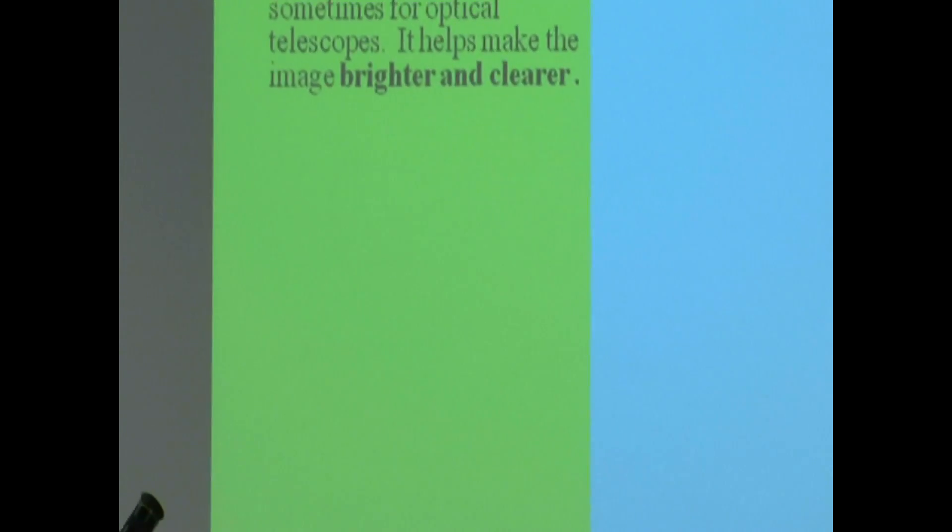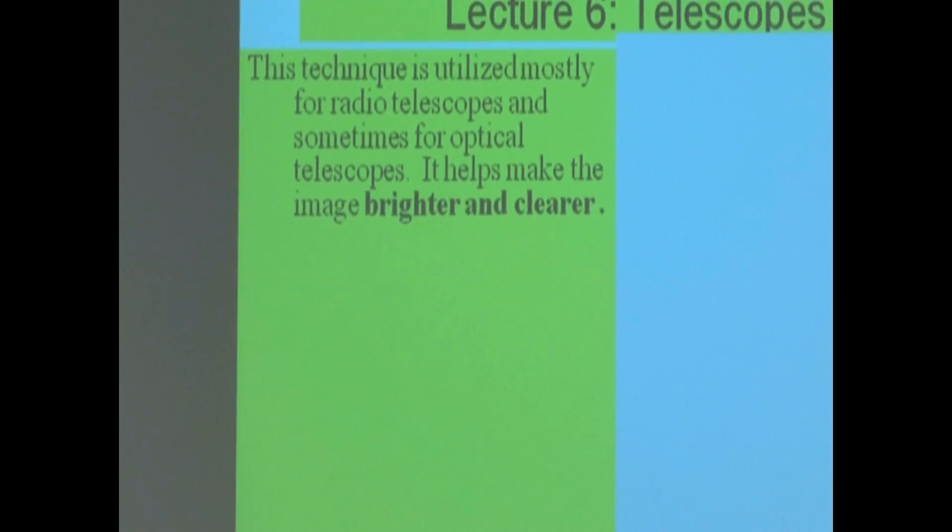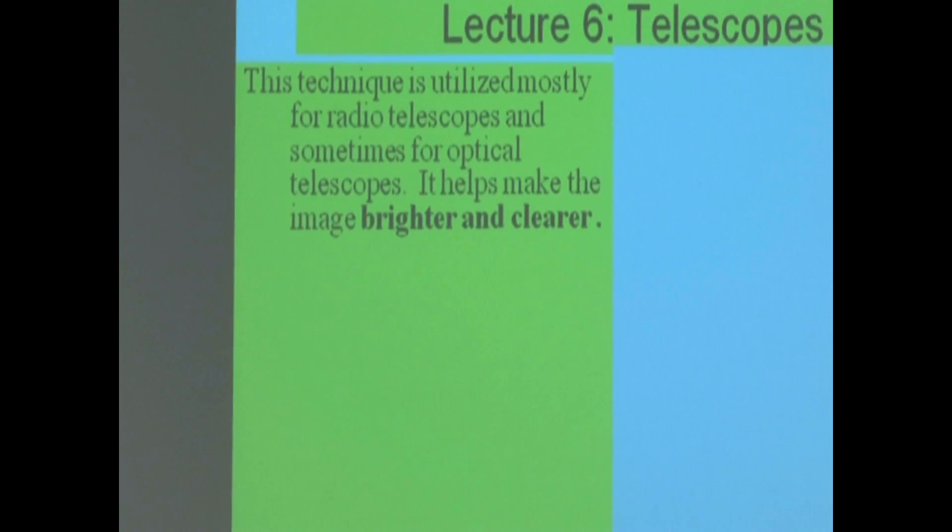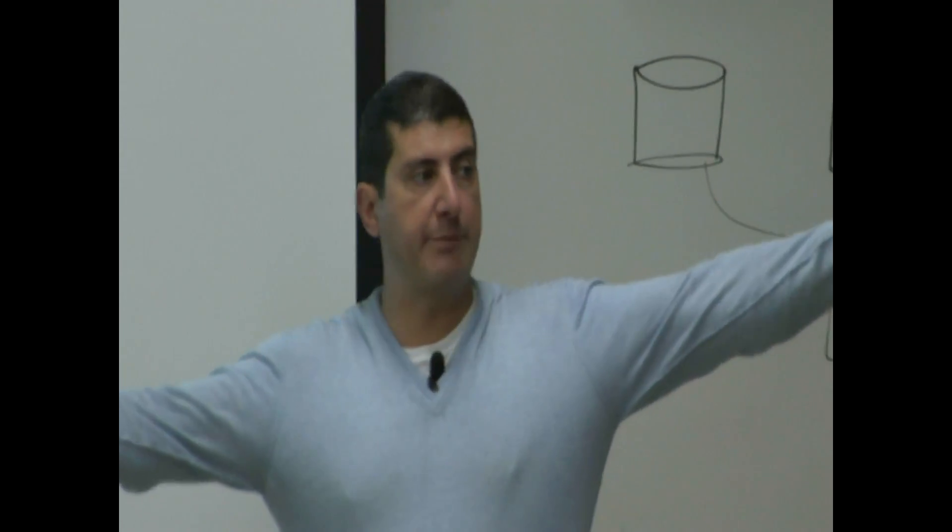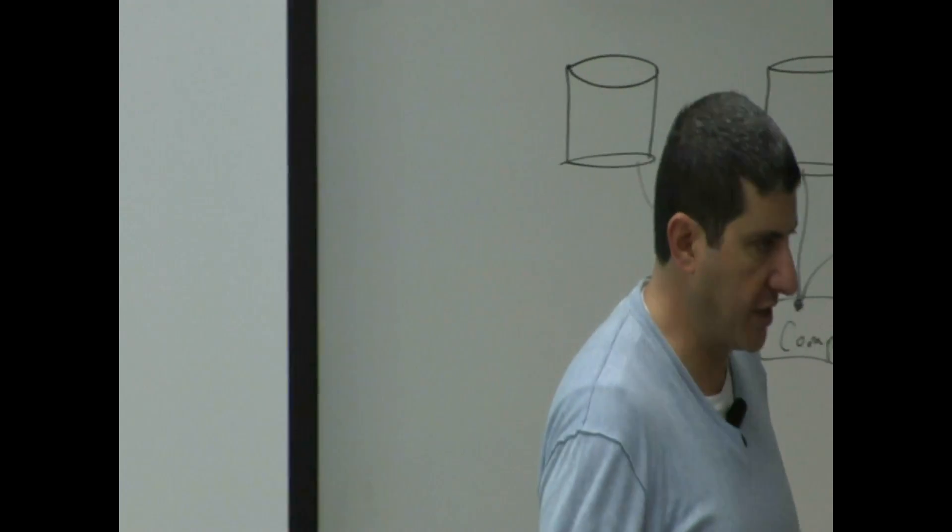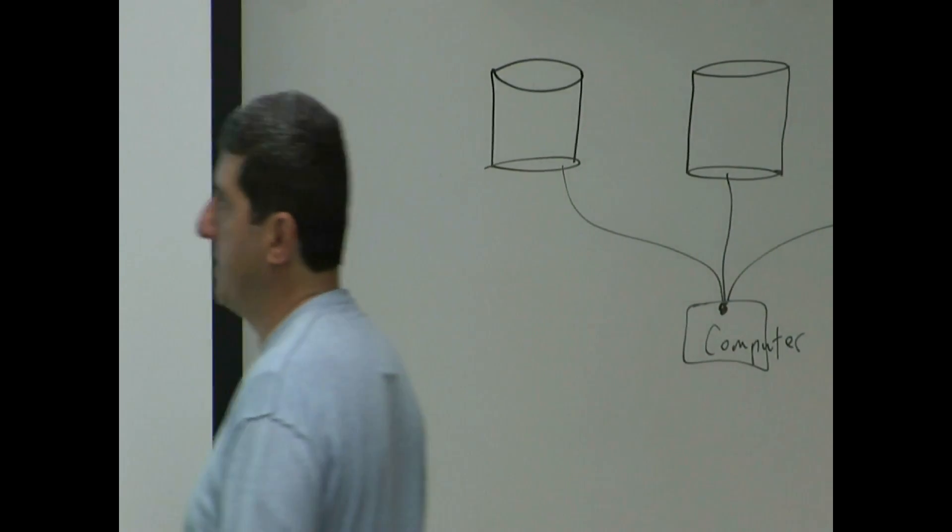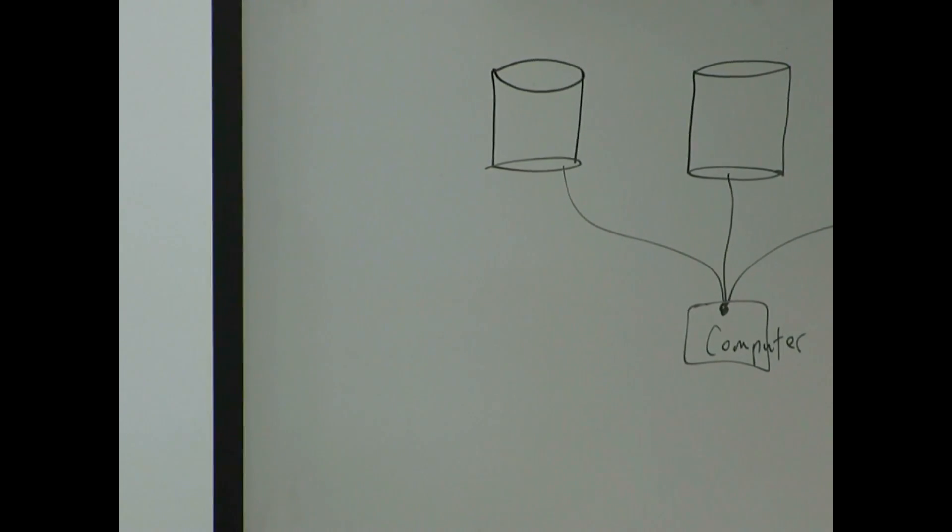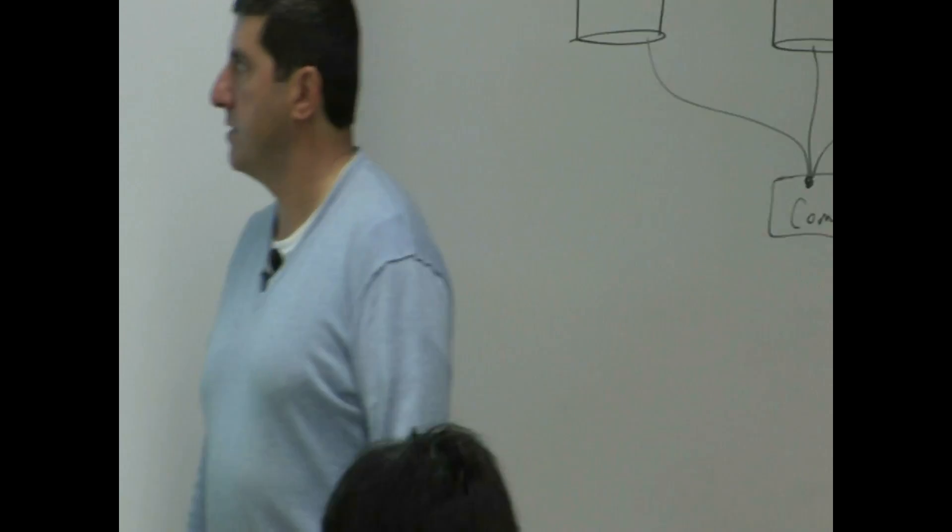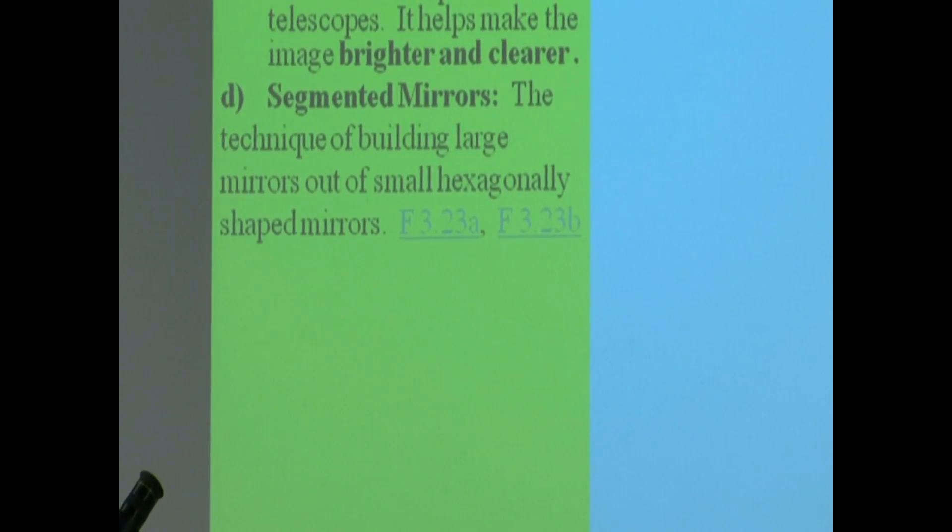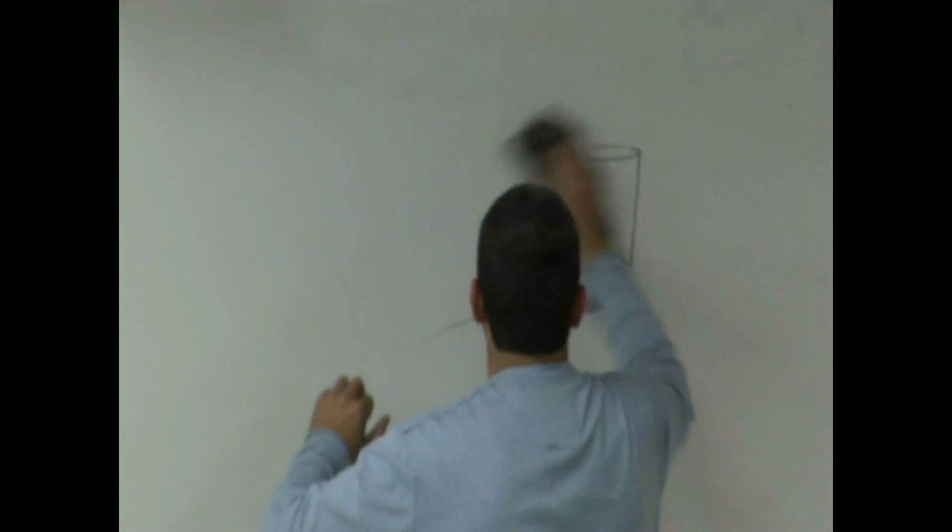This technique is utilized mostly for radio telescopes and sometimes for optical, because you want to make their aperture huge. It helps make the images brighter and clearer, because by making the aperture bigger, you're making it brighter and clearer. Remember, segmented mirroring. Segmented mirroring is a way of building, another way of building a big telescope by making it out of small hexagonal pieces.